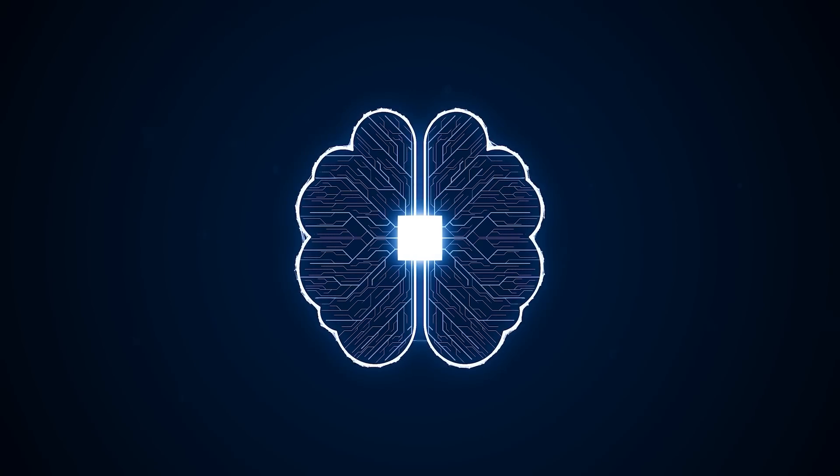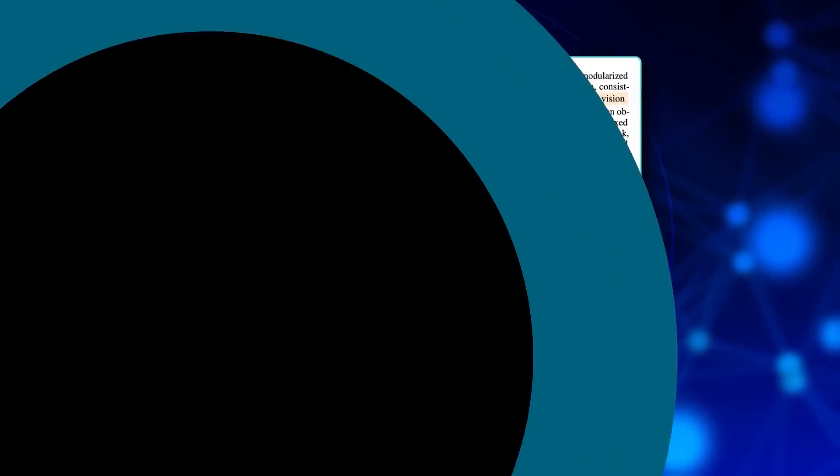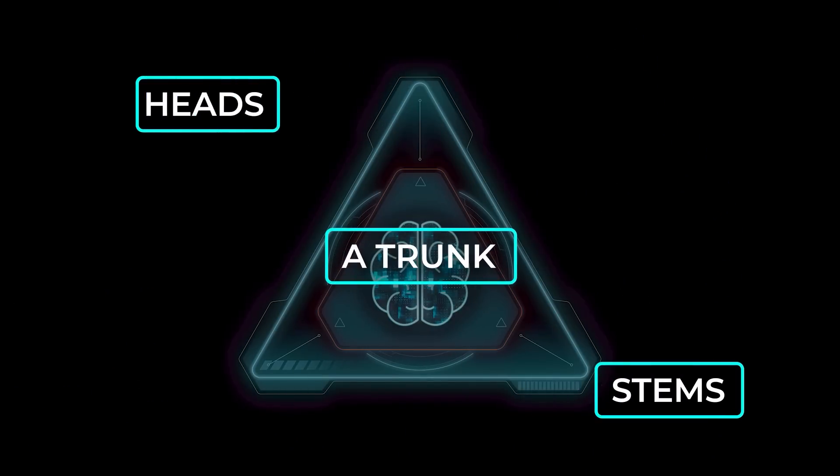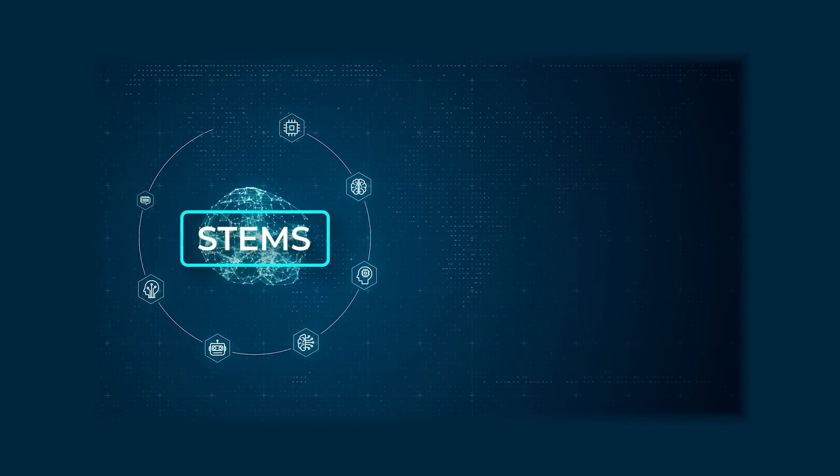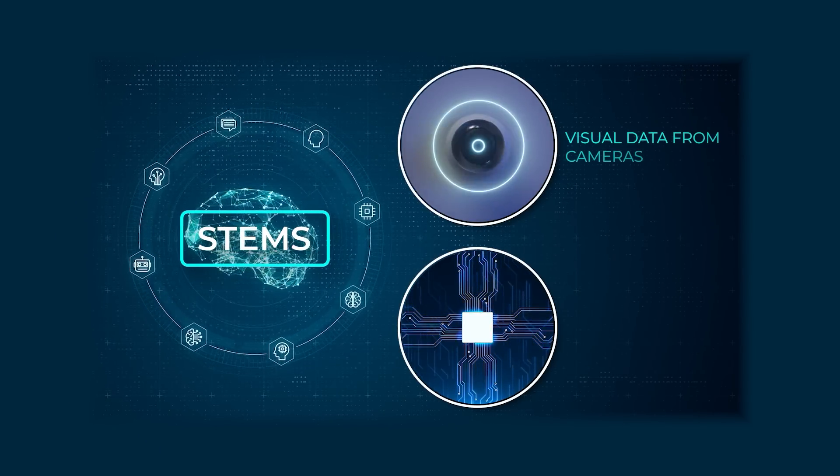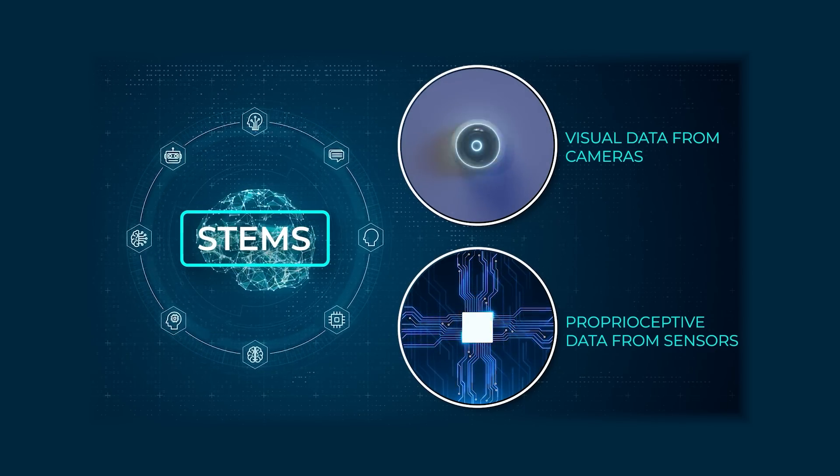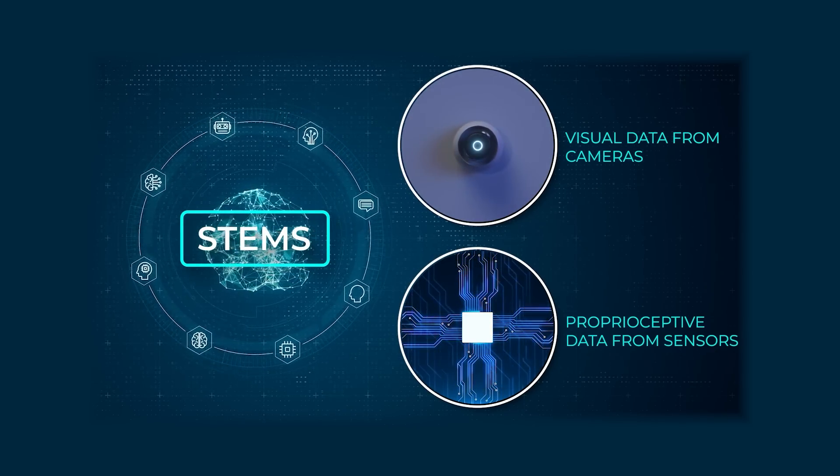Here's a bit more on how they tackled the technical side. Inside HPT, there are three main components: stems, a trunk, and heads. Think of the stem as a translator. It takes in the unique input data from different robots, like visual data from cameras or proprioceptive data from sensors, and converts it into the shared language that the transformer can understand.